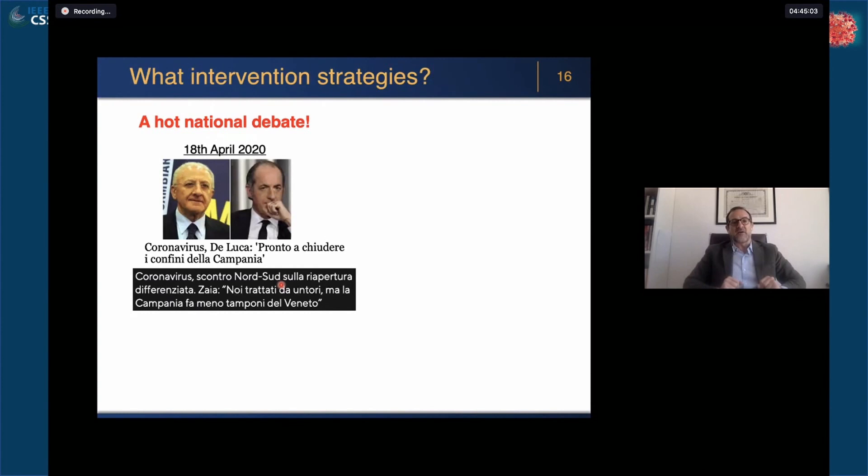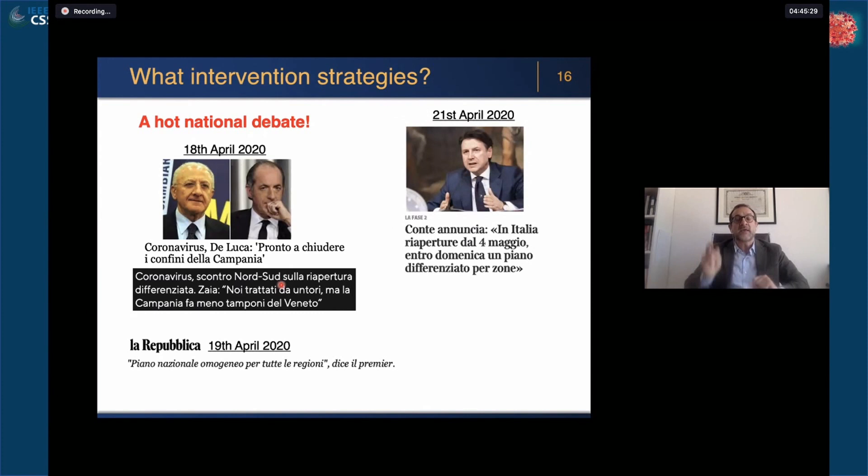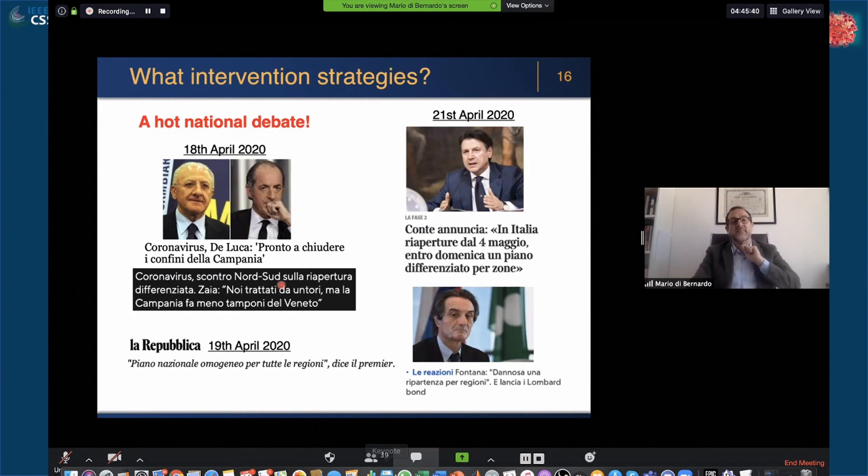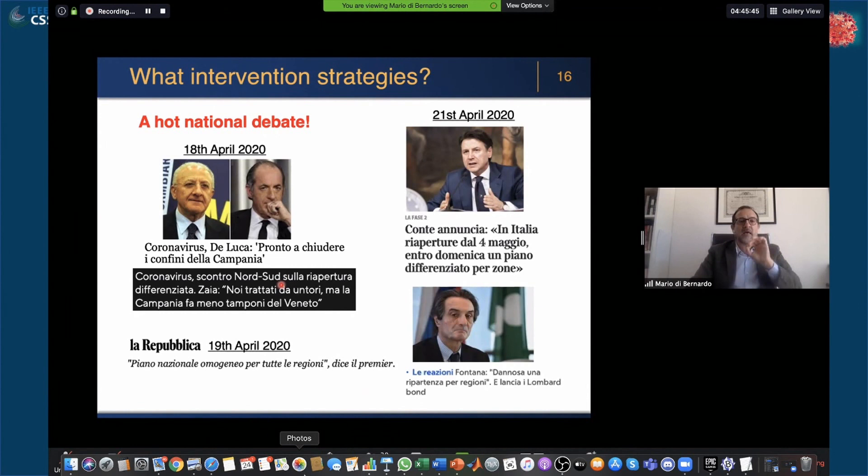We come to our hot national debate of the day: what to do. Here are some snippets from the press on the past few days. On the 10th of April 2020, a fight between the presidents of the regions, some want to open the regions, some want to stay closed and safe. On the 19th of April, our prime minister declares we will have a homogeneous national plan for all the regions. But on the 21st, he announces that there will be a differentiated plan per region. Some governors are still wondering whether it is the best option.